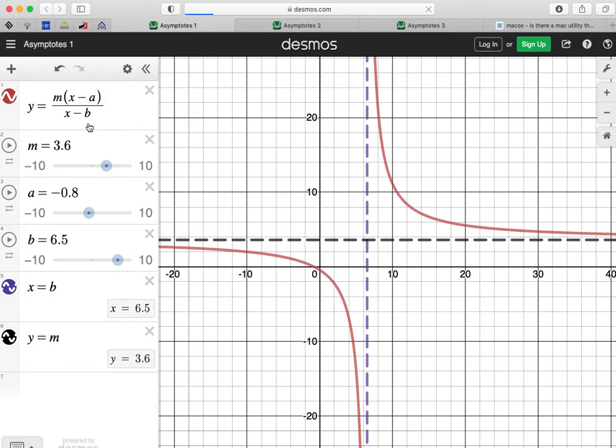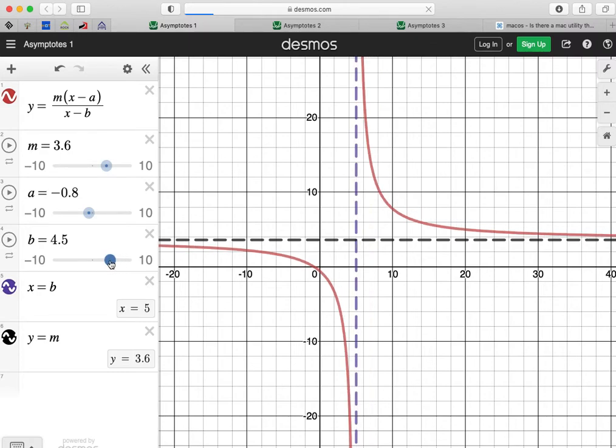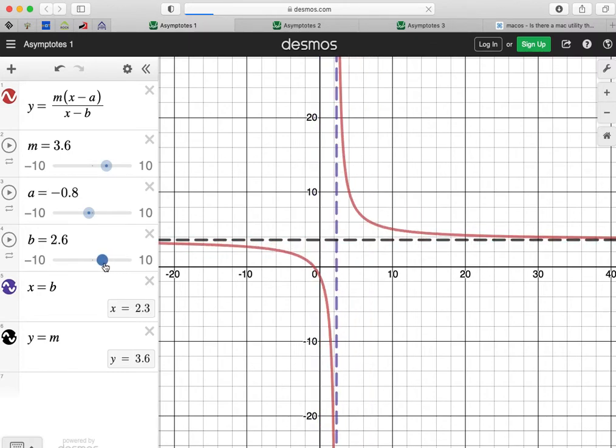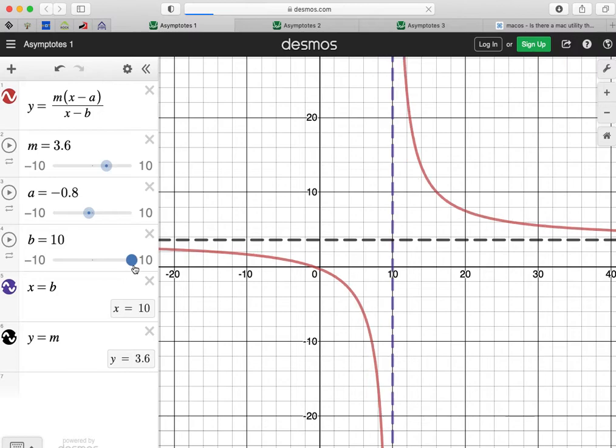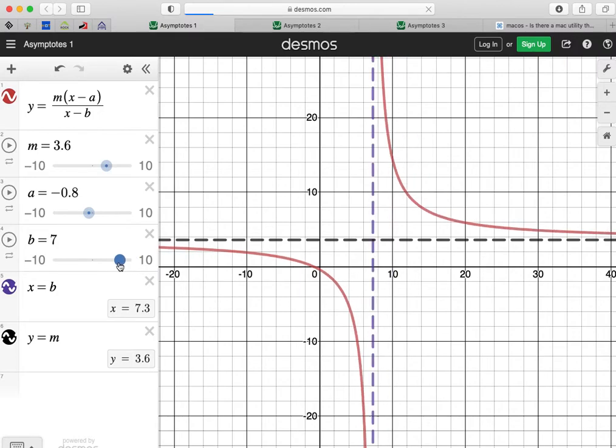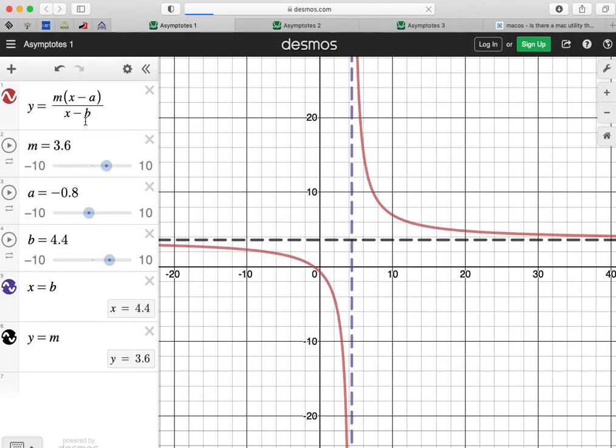What does change one of the asymptotes? Well, let's look at b. Does changing that change it? Well, yeah, that seems to change the position of the vertical asymptote. And that's going to make sense. Because remember, one of the problems we have with a function is when the denominator is 0. We can't have x minus b equal to 0.